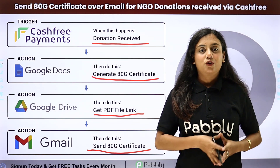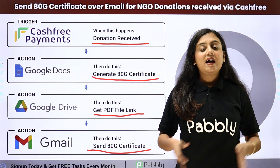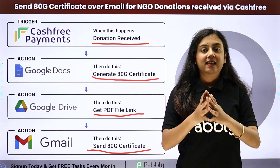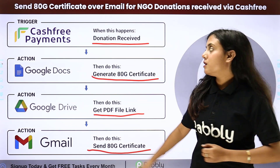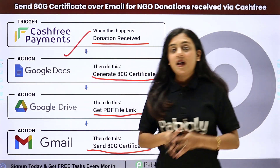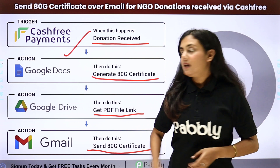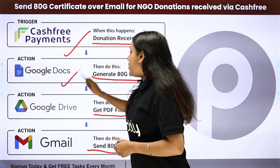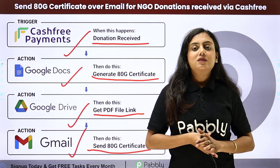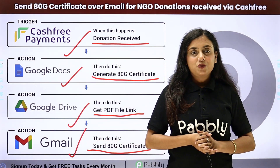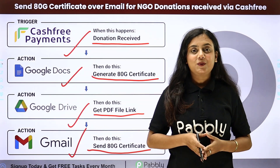In Pabbly Connect, to start an automation process we need a trigger and actions. In this process my trigger application is going to be Cashfree Payments, and my action applications are going to be Google Docs, Google Drive, and Gmail. If you want to learn how to create this automation, let me take you to my screen.